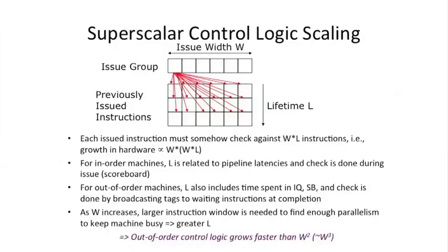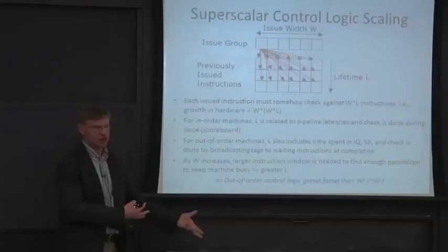For an in-order machine, the complexity is not so bad. L is kind of the pipeline length; you have your width W, but you just need a scoreboard — an index-based structure. When you go out-of-order, you start to have complexity where all of the results that come back have to be broadcast against either all the reservation stations in a distributed instruction queue, or all possible instructions in a single instruction queue.